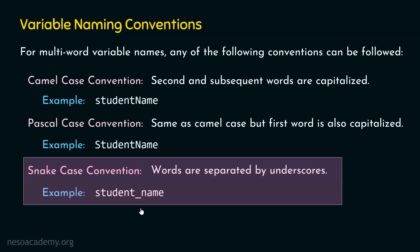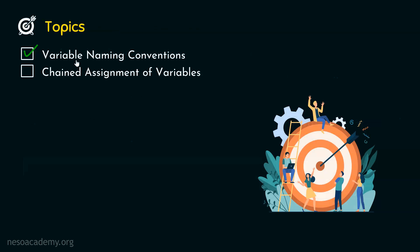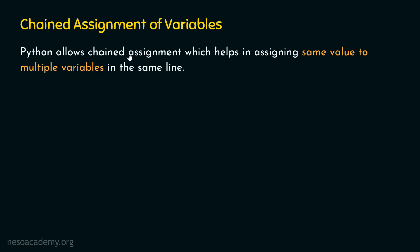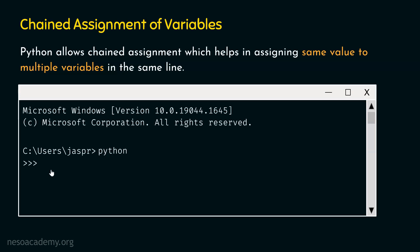Variable naming conventions are now completely clear. Let's move to chained assignment of variables. Python allows chained assignment, which helps in assigning the same value to multiple variables in the same line. For example, we can type x = y = z = 10 and hit enter — we will not get any error. This is chained assignment: x, y, and z are all pointing to the same value 10.